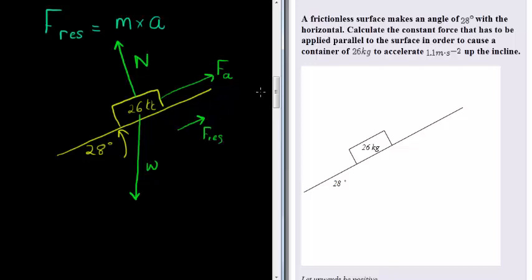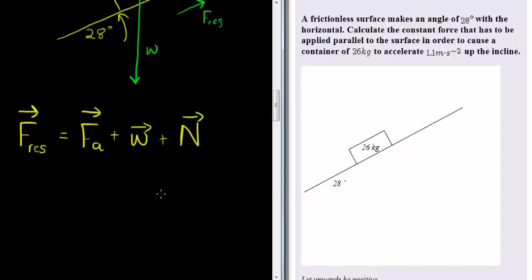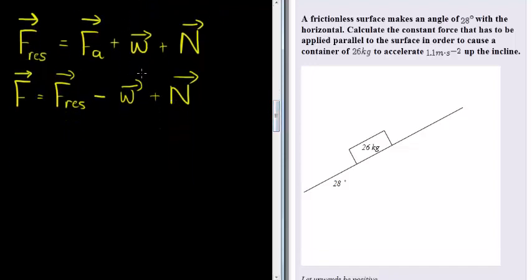We know that the resultant force is equal to the applied force plus the weight plus the normal force — this is vector addition. Which means our applied force equals the resultant force minus the weight minus the normal force. Now we also remember that our weight can be divided into two components, and one component will cancel the normal force anyway.